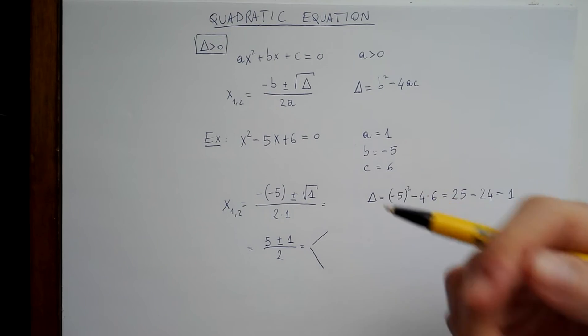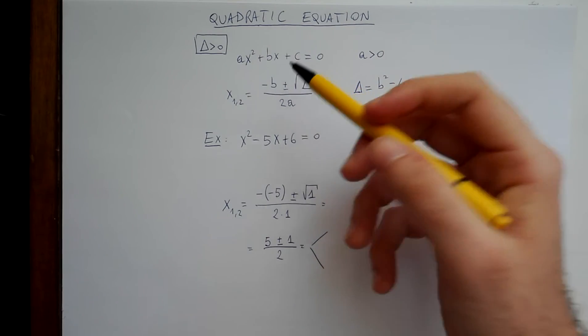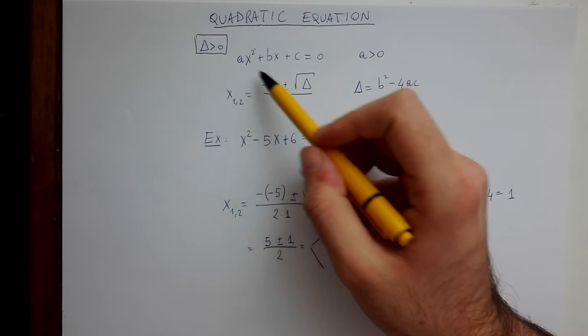We have two solutions because this is a quadratic equation. Remember that the number of solutions of an equation is the same as the degree of the polynomial.